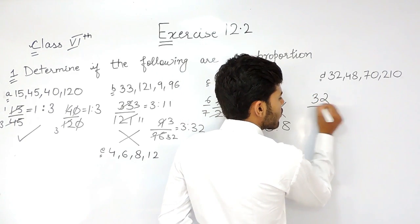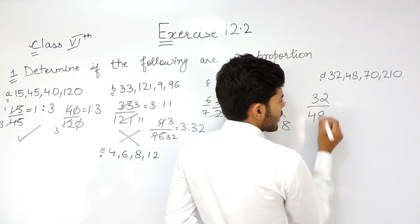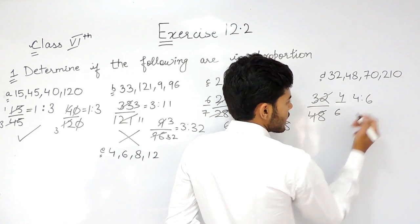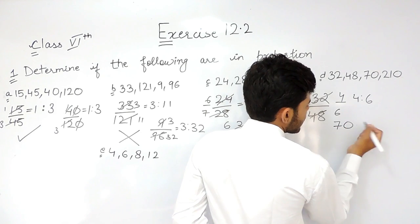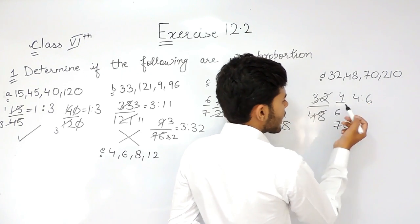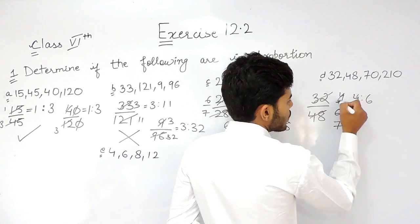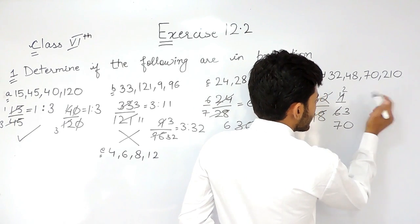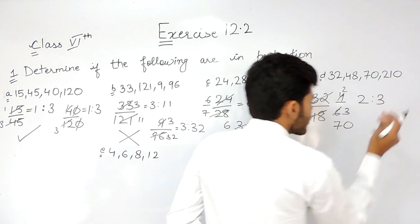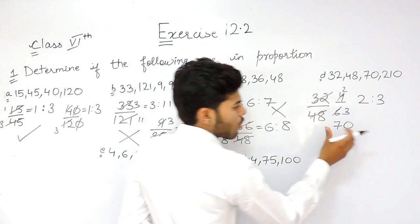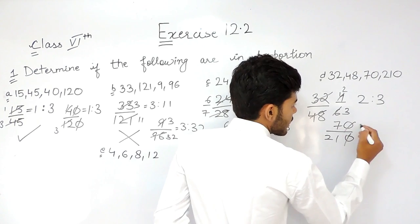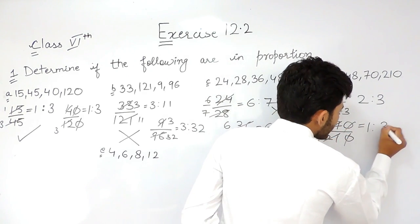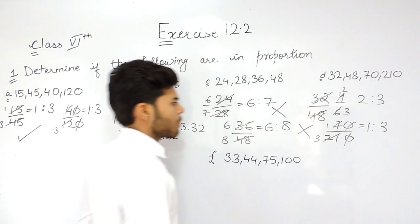Then 32 upon 48. That's 4 times 8, 6 times 8, the ratio is 4 ratio 6. Or we can again cancel this out, 2 times 4 to 3 times 6, so the ratio will be 2 ratio 3. And 70 upon 210, that will be 1 times 7, 3 times 7, so 1 ratio 3. This is also not in proportion.